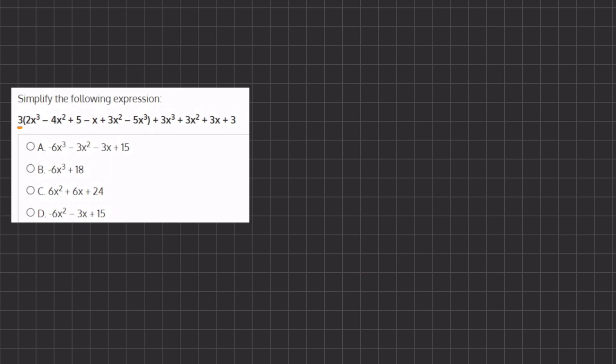So if we do so, we get 3 times 2x³, we get 6x³, minus 3 times 4x squared, we get minus 12x².